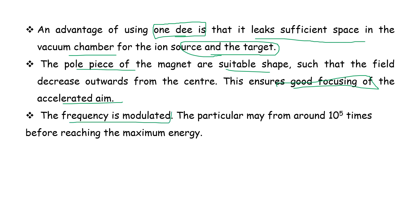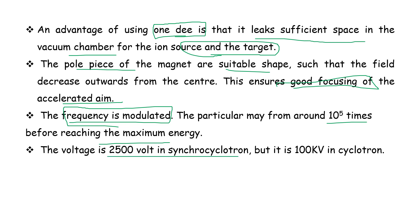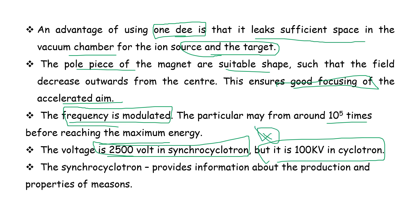The frequency is modulated or regulated about 10^5 times before the particle reaches maximum energy. The voltage used is 2,500 volts compared to 100 kilovolts in a standard cyclotron. The synchrocyclotron provides information about the production and properties of mesons.